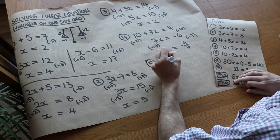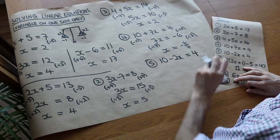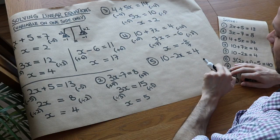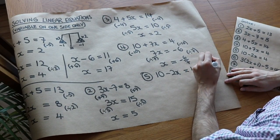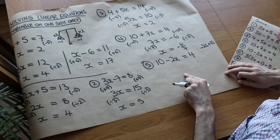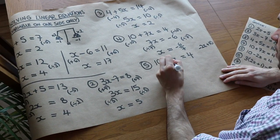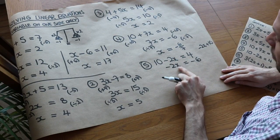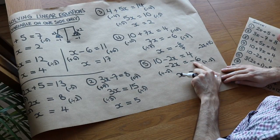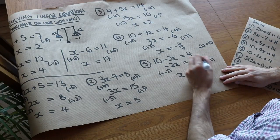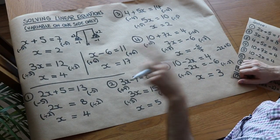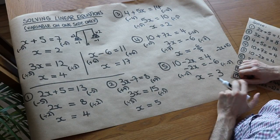Now we've got 10 minus 2x is equal to 4. This is a bit harder. You could think of this as x being multiplied by minus 2 and then adding 10 — so the left hand side is the same as minus 2x plus 10. Subtract 10 from both sides, giving minus 2x equals minus 6. Then x is being multiplied by minus 2, so divide both sides by minus 2, which just leaves x. Negative 6 divided by negative 2: negative divided by negative is positive, and 6 divided by 2 is 3, so x equals 3. We'll see in the next video an alternative method when variables appear on both sides.